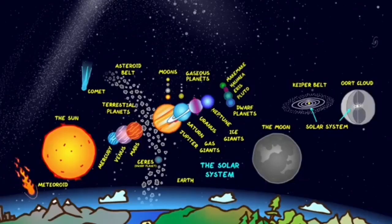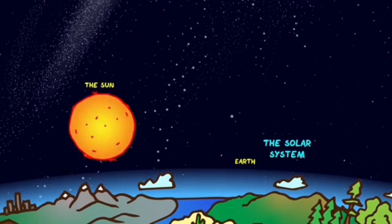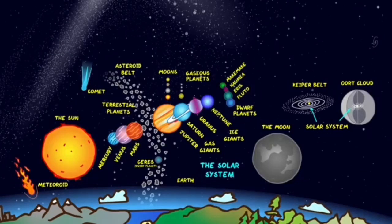But today we are going to look at the components or things that are found in the solar system. Well, there are many things in the solar system. For example, we have a star, that is the sun. We have planets, moons, dwarf planets, comets, asteroids, gas and dust.